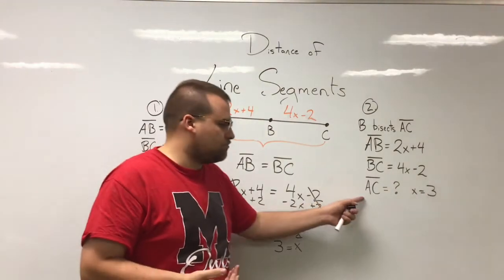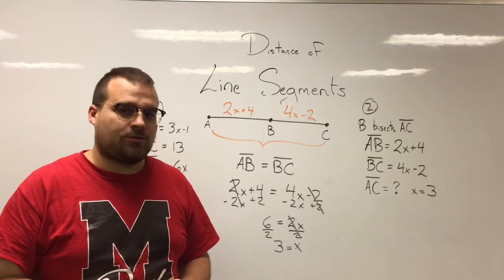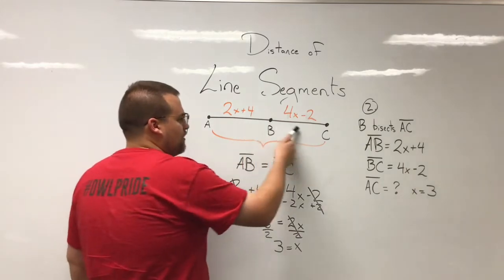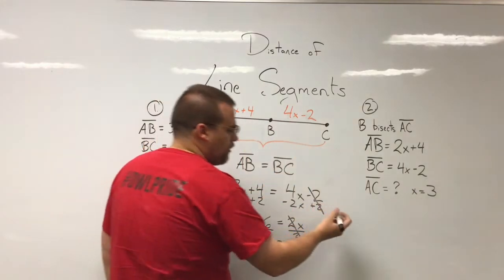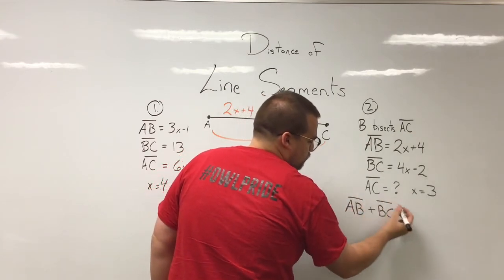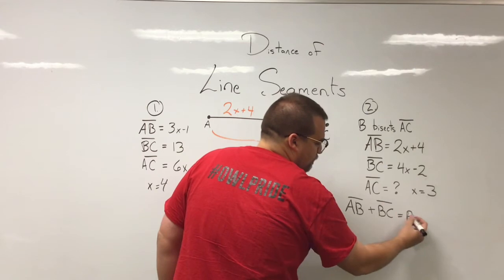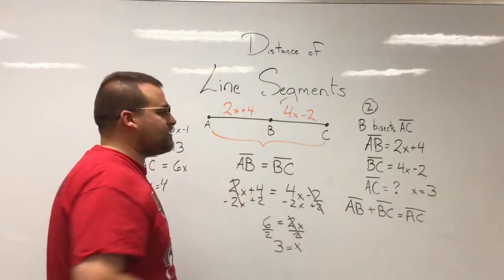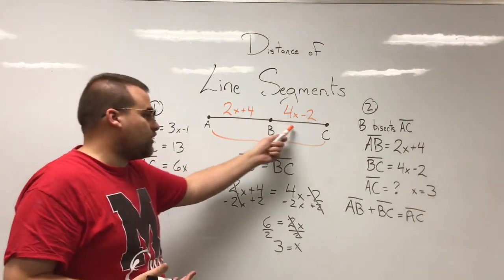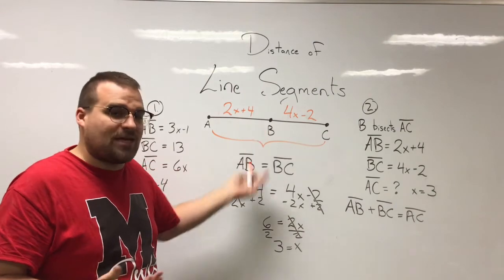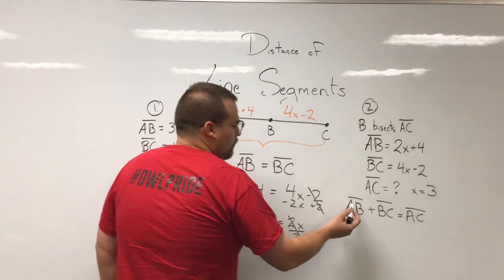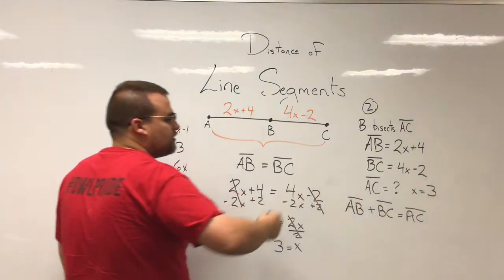Now the last question we have to answer is what's AC. How can we figure that out? Well, we created an equation with the first problem that kind of addressed that. We said that these two smaller segments make up the larger segment, so therefore AB and BC will make AC. Now it doesn't matter whether B is a midpoint or not in that situation. It could be, it couldn't be. Regardless, two smaller segments are going to make up a larger segment. That's just a true statement regardless. So if we can figure out what AB or BC is numerically, then we're good.